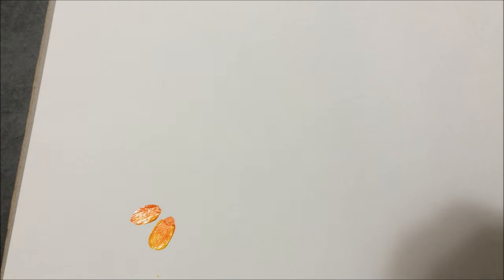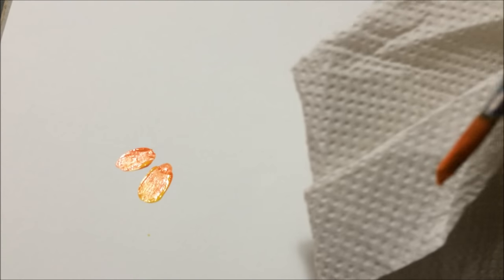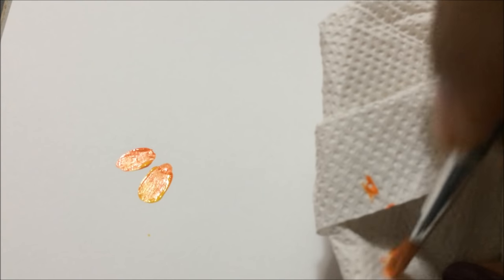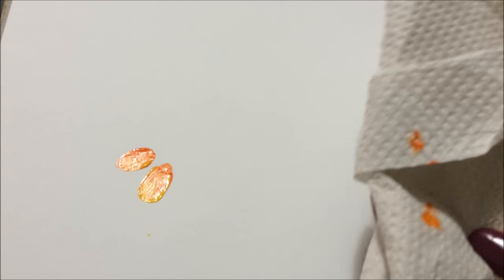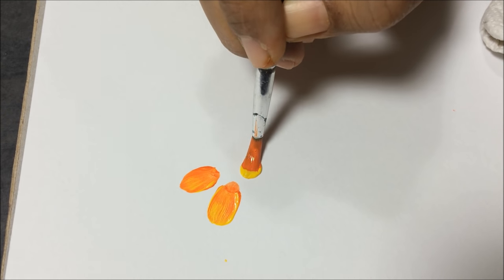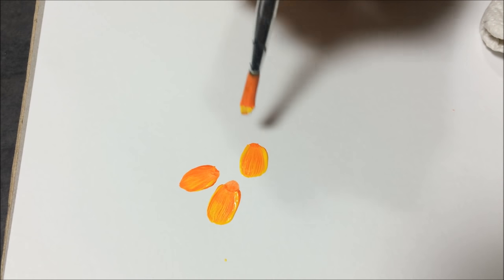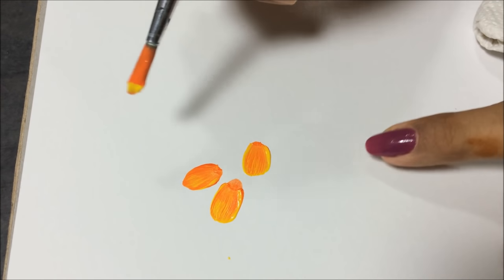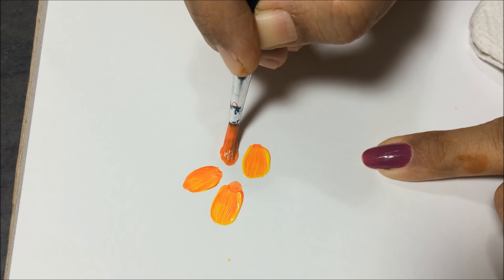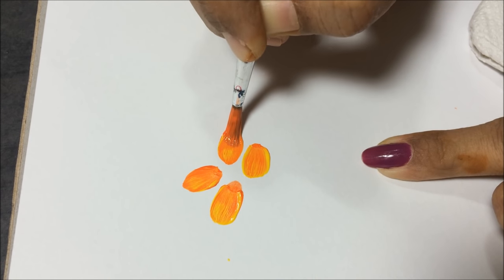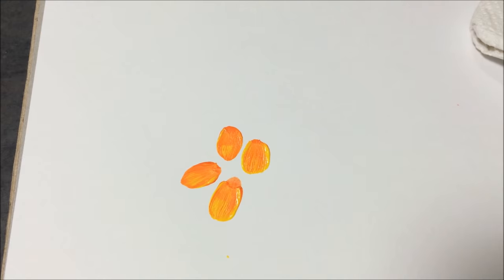Now dab it two three times on palette to remove extra paint from brush. Check your brush - is it loaded properly or not? To reload the brush, clean tip of the brush again with kitchen towel and repeat the process. It's very important to keep your tip clean after every stroke, otherwise your loading color will be very muddy.